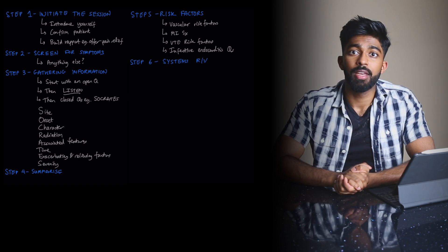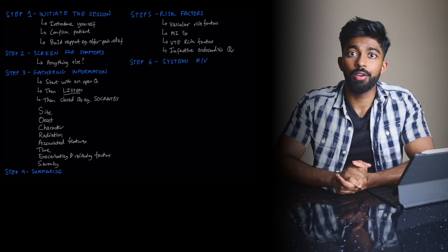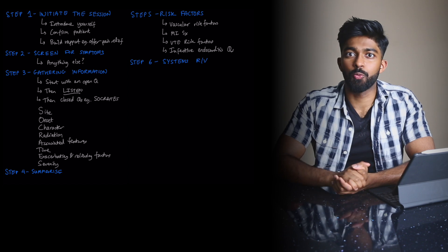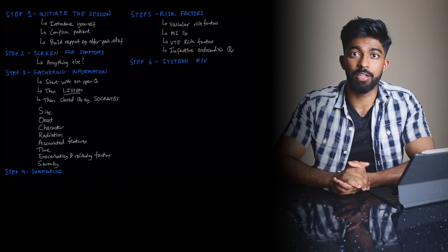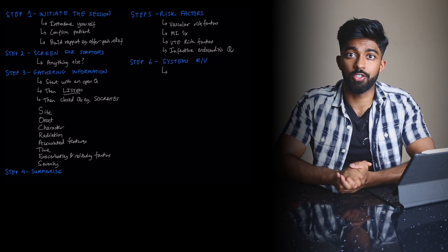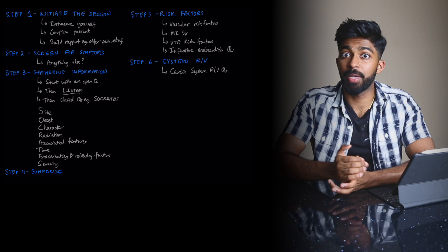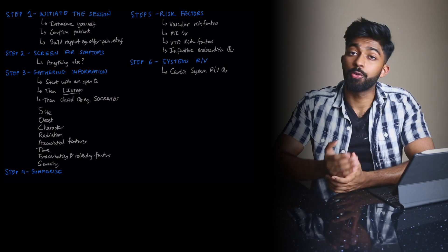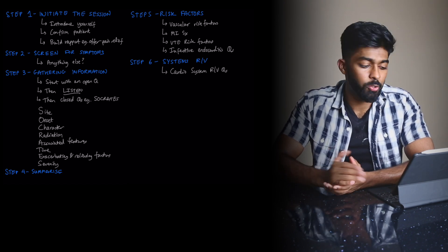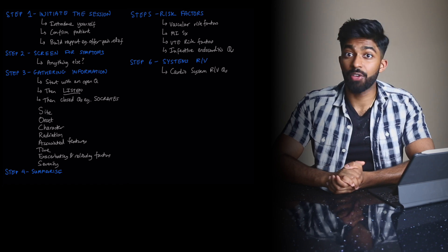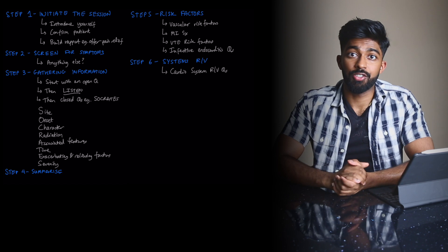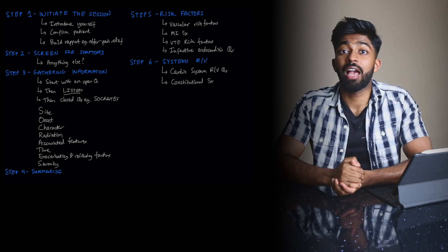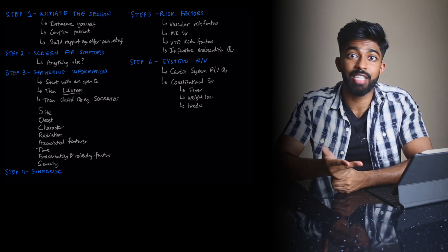Step six is the systems review. This involves a body-system-based screen for any symptoms your patient may not have mentioned in your initial screen. It's different from the risk factor section, which is much more focused. For a chest pain history, your cardio systems review questions would be: do you ever feel short of breath, feel your own heartbeat racing, notice any ankle swelling, have leg pain on walking, or feel dizzy or lose consciousness? I also always add constitutional symptoms in the systems review: have you had any fever, recent weight loss, tiredness, or loss of appetite?